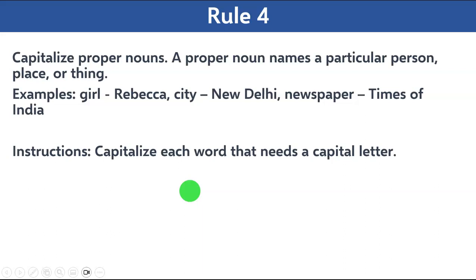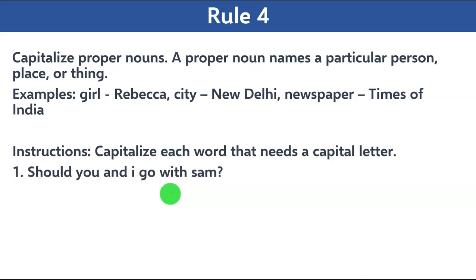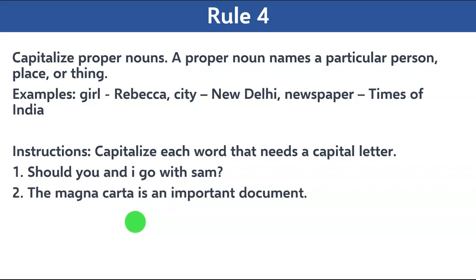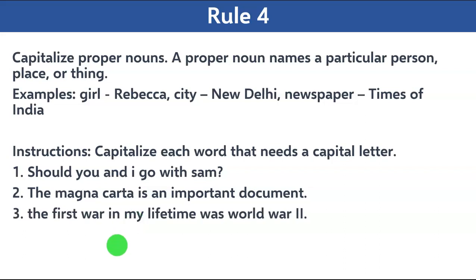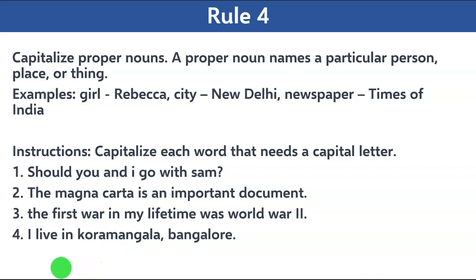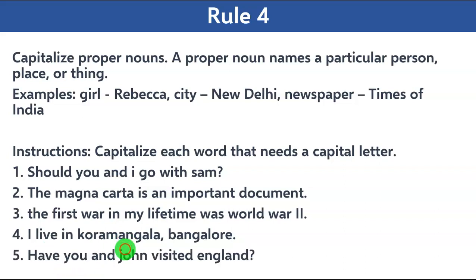Now for a quiz on rule number four — please remember rules one, two, and three as well. Capitalize each word that needs a capital letter. Number one: 'should you and i go with sam?' Number two: 'the magna carta is an important document.' Number three: 'the first war in my lifetime was world war ii.' Number four: 'i live in kora mangala bangalore.' Number five: 'have you and john visited england?' Your 10 seconds start now.